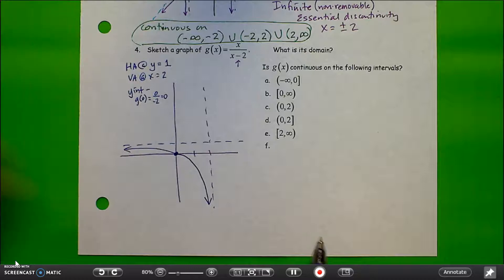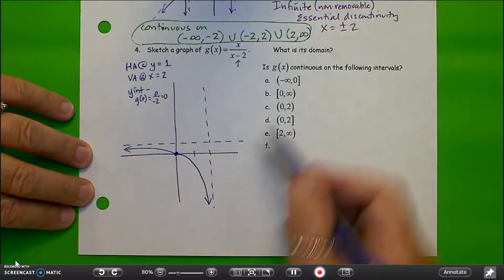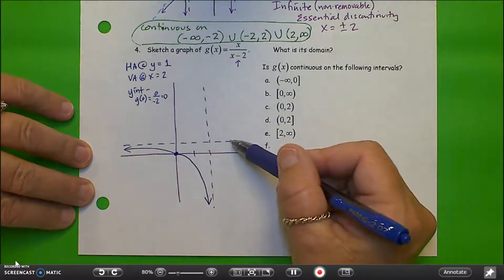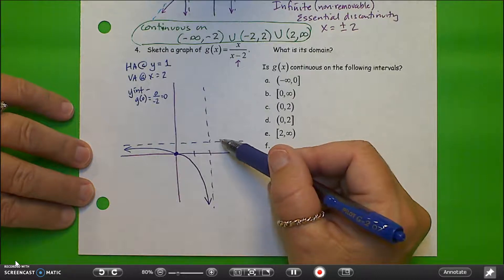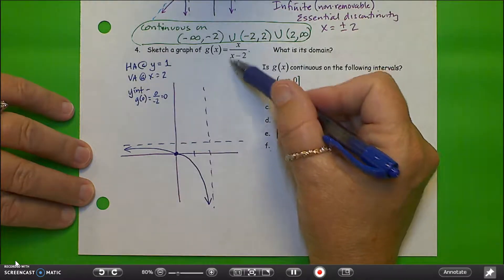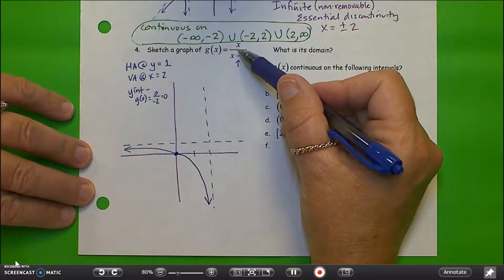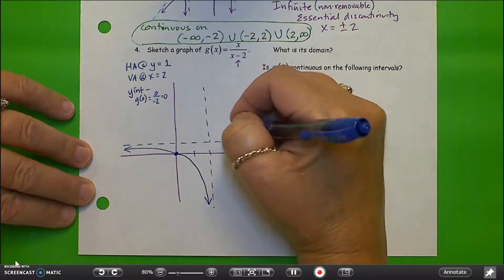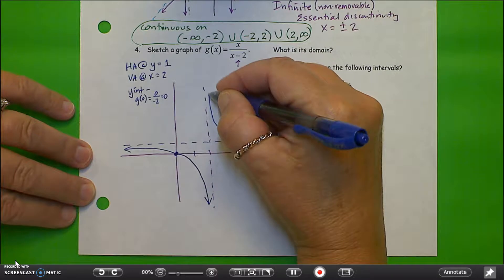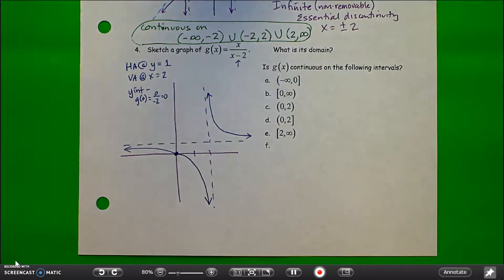The other location: looking at the limit as x approaches 2 from the right-hand side, I could consider numbers like 2.1 being plugged in — we'd have a positive number over a positive number. So this graph looks something like that. Okay, that's close enough for what we need to do.